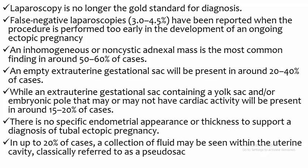An extra-uterine gestational sac will be present in around 20 to 40 percent of cases, while an extra-uterine gestational sac containing a yolk sac and/or embryonic pole that may or may not have cardiac activity will be present in around 15 to 20 percent of cases.